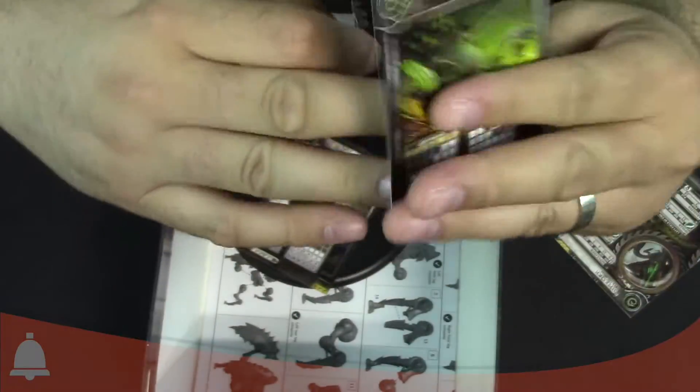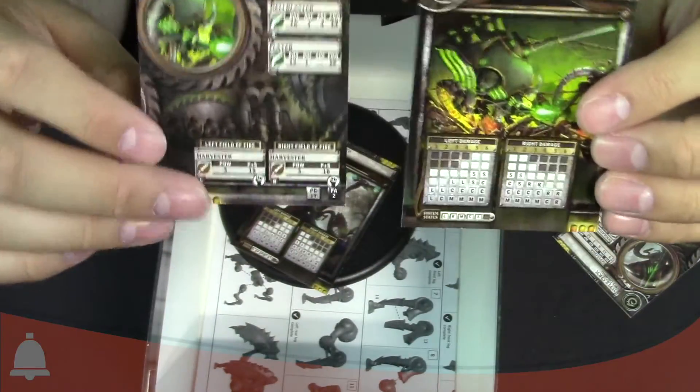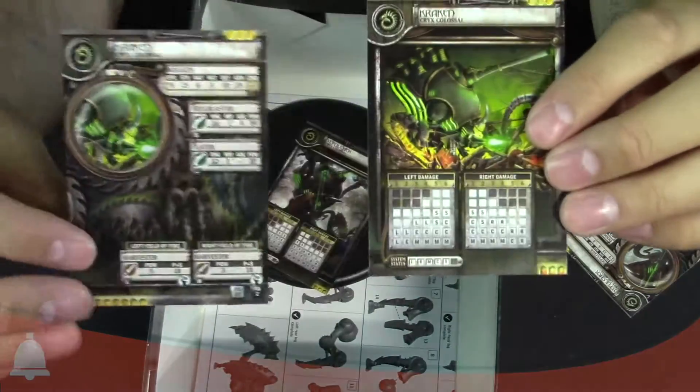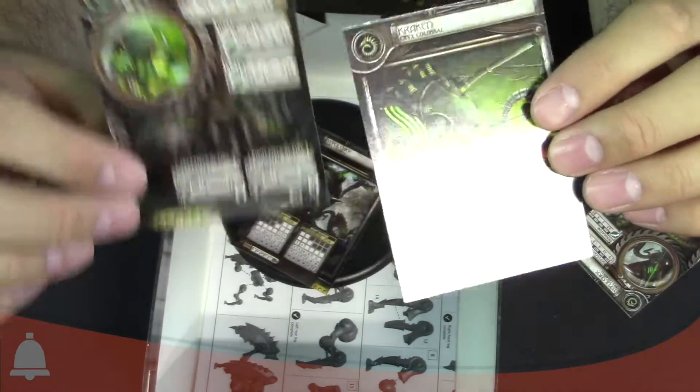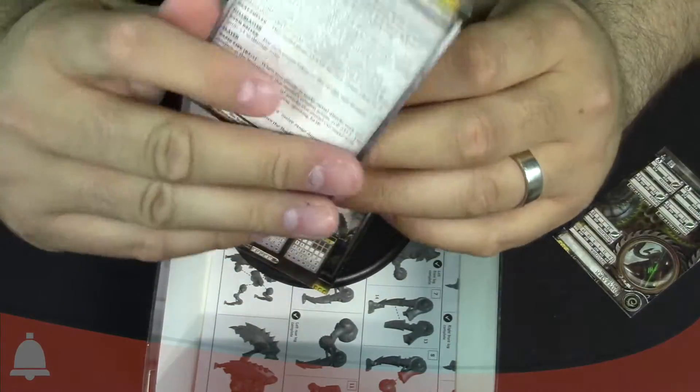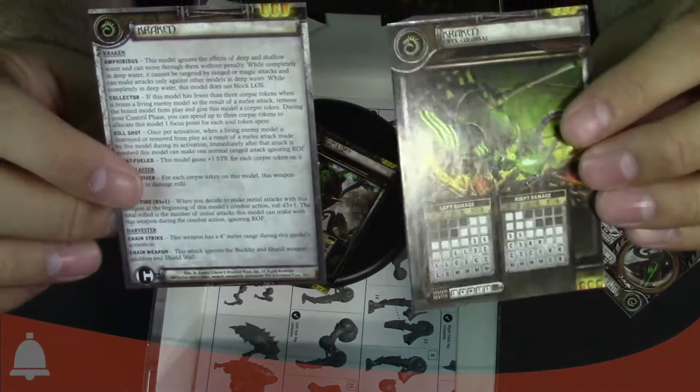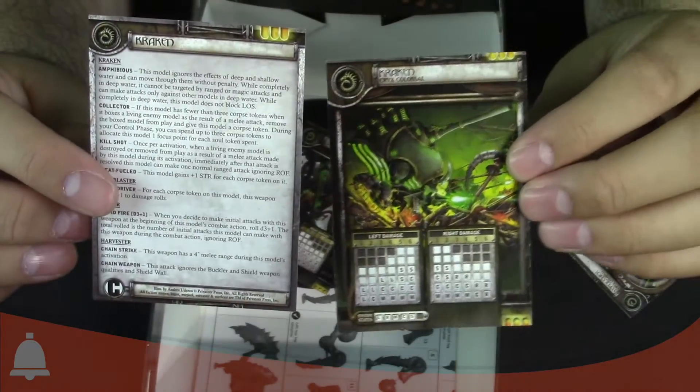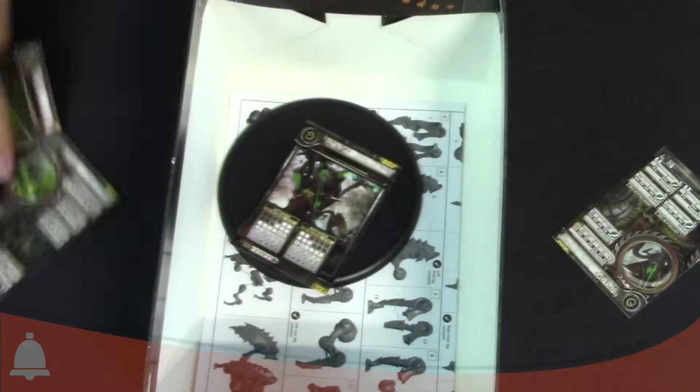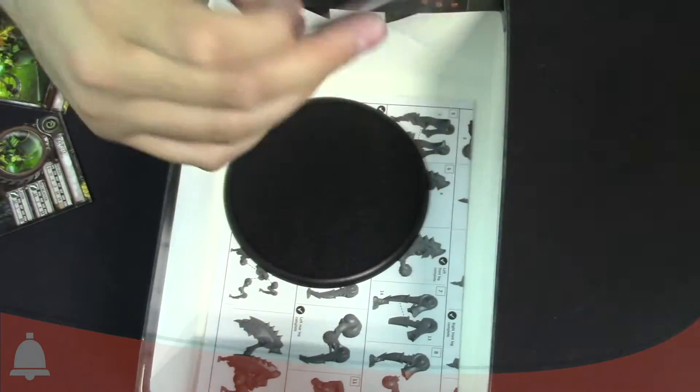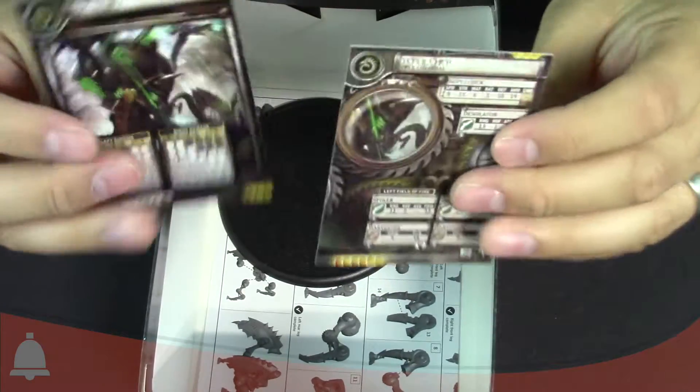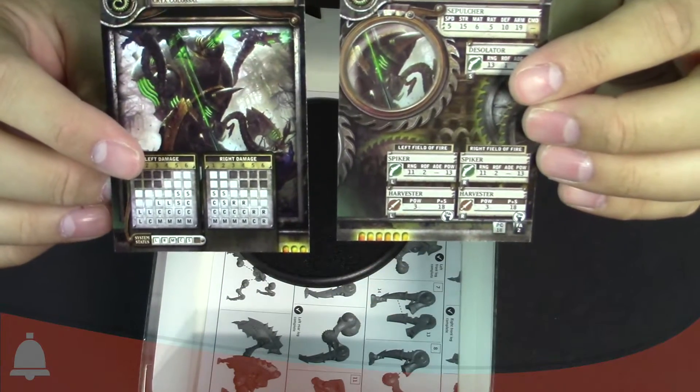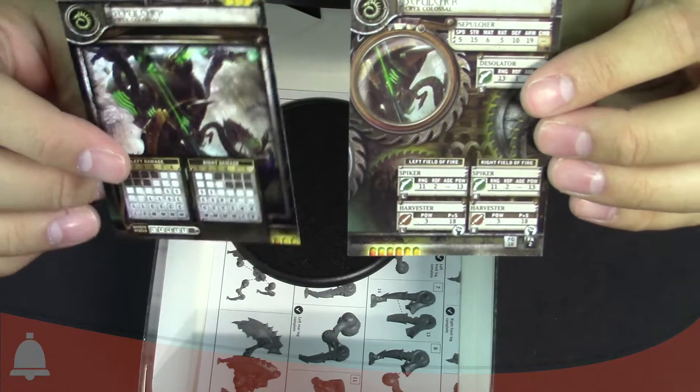I mean, colossals are pretty mean. They got double the boxes as a heavy warjack and stuff like that, so pretty awesome. And then the back here you can see from the stats too, this thing's mean. It hits really hard, it's got a bunch of special rules, special abilities. So that's the Kraken and the Sepulcher.